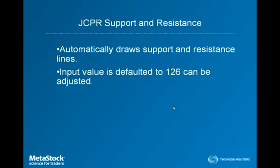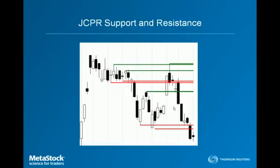JCPR also uses support and resistance as a way of identifying candle patterns, and it's incorporated automatically into the scoring techniques of the add-on. We've also included a support and resistance indicator so you can see these values on your chart. When you apply the indicator, it automatically draws the support and resistance levels. The default look-back period is 126 bars, and you can change that. Depending on your look-back period, your support and resistance may change, but it doesn't necessarily mean that it will. Here's a visual demonstration of how the JCPR support and resistance looks on a chart.